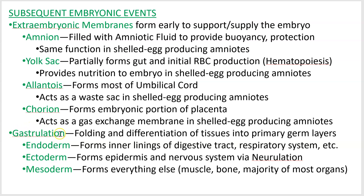Moving on to an embryonic process called gastrulation, which you've heard of in lab. This is where the embryo folds and becomes more complicated, with cells differentiating into different types of tissues. Those basic tissue types are called primary germ layers — germ is short for germinal, so these are your initial layers that germinate into true tissues. Endoderm forms the inner linings of your digestive tract and respiratory system. So the simple columnar epithelium in your stomach and the respiratory mucosa — those form from endoderm.